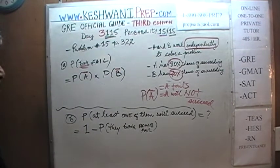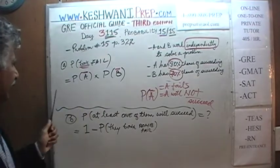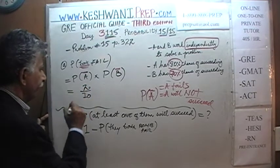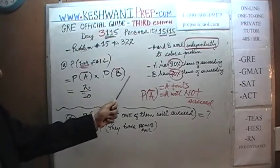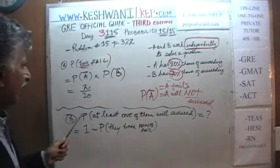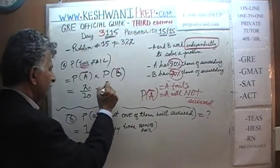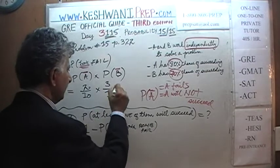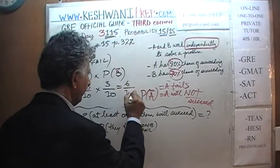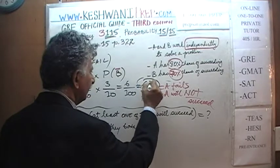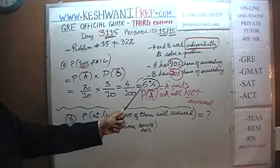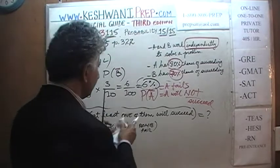And that's very straightforward. The odds that A will succeed is 80%. Therefore, the odds that A will fail is 20%. The odds that B will succeed is 70%. Therefore, the odds that B will fail is only 30%. There you go. We are done. 2 times 3 is 6. It's 6 out of 100. So the odds that they will both fail is 6%.